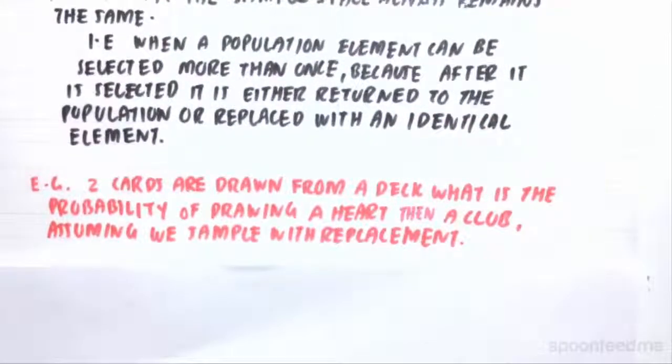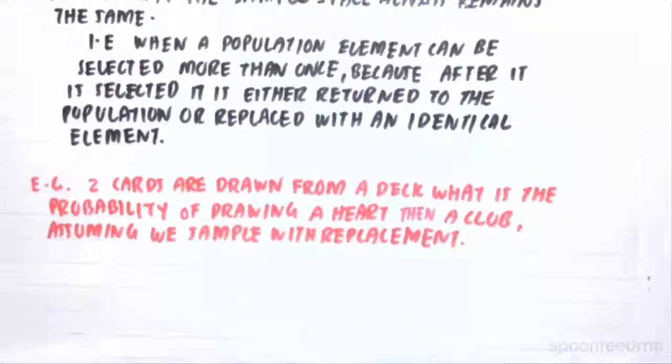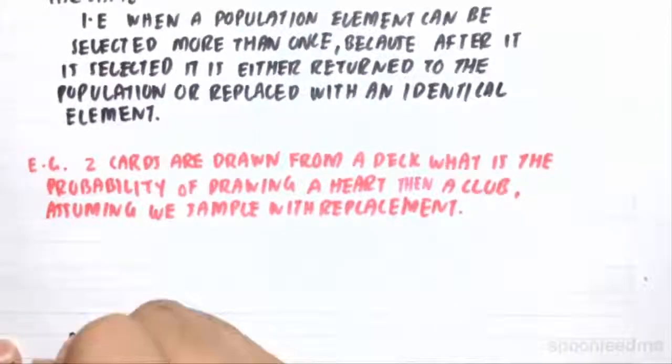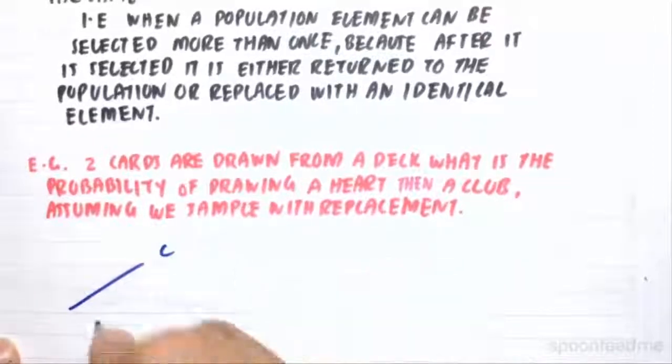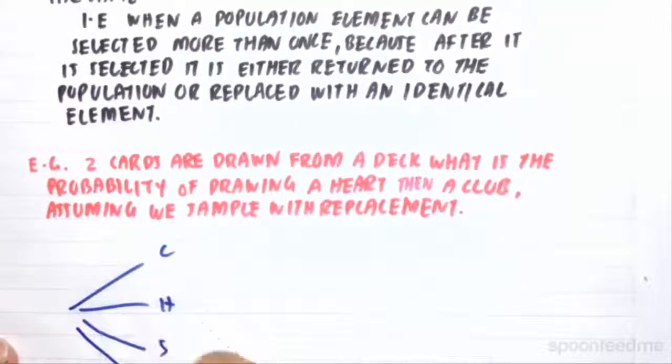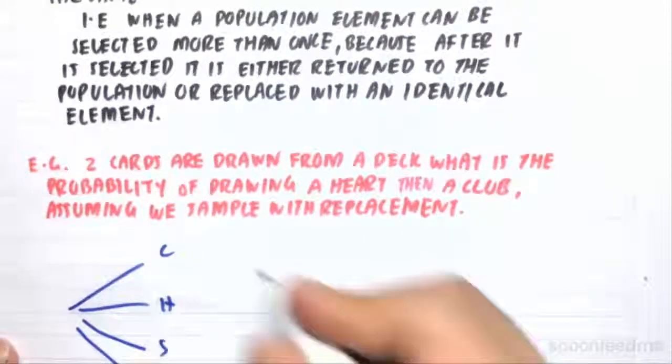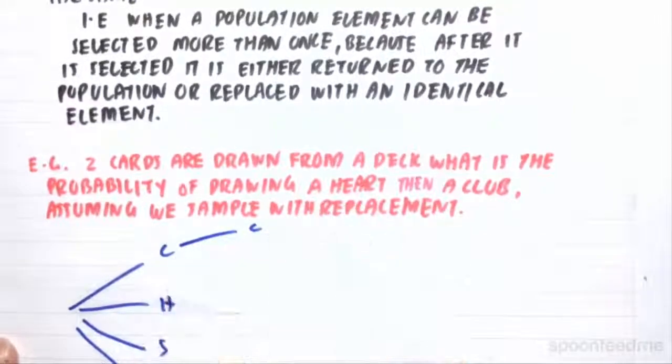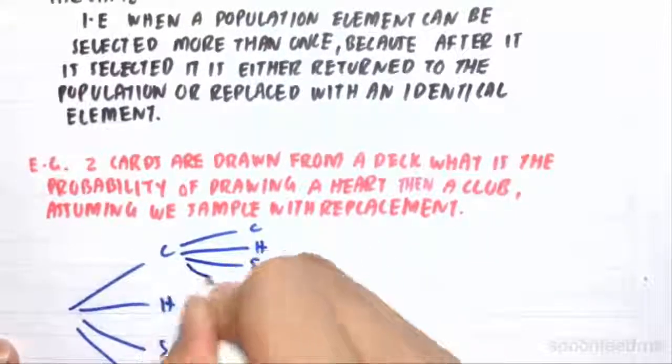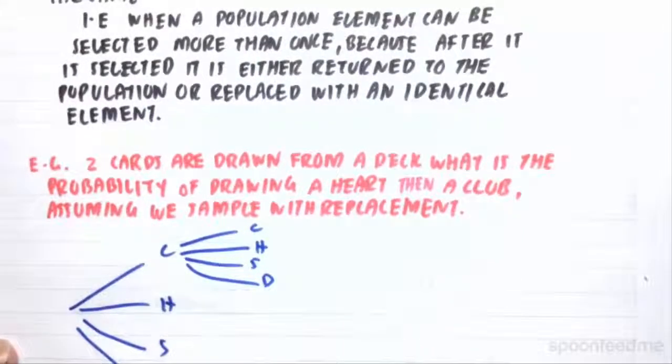For example, if we have two cards, if we're going to draw two cards from a deck, what is the probability of drawing a heart and then a club, assuming that we sample with replacement? So if we divide this up into clubs, hearts, spades and diamonds, we can either get a club, heart, spade or diamond and we apply this to everything here.